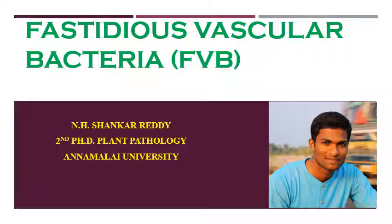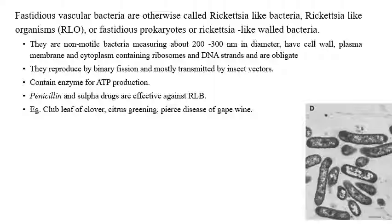Fastidious vascular bacteria (FVB) is a type of bacteria which causes symptoms in plants. My name is Enid Shankarady and I am doing a PhD in plant pathology at Annamalai University. Fastidious vascular bacteria is otherwise called RLO — rickettsia-like organism, or rickettsia-like bacteria.